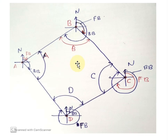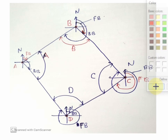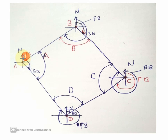Let us see a figure to better understand. Let A, B, C, D be a closed traverse — a series of connected lines where the first and last points are connected. The fore bearing of line AB is measured from north at station A towards the AB line. The back bearing of AB is measured from north at station B towards the AB line.